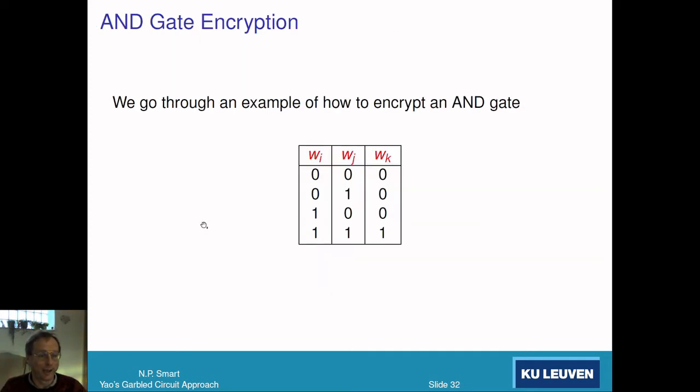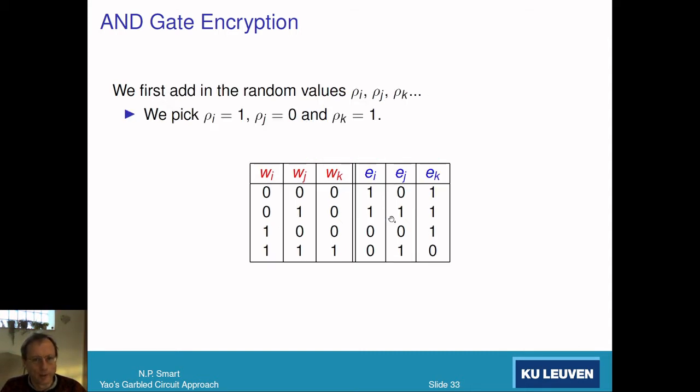Let's start with an AND gate. Recall we have the standard truth table. Now we come up with these row values which are going to encrypt the truth table. These rows are keys which we use to encrypt the AND table. We've got w_i the message, we encrypt it with row_i and we get e_i.